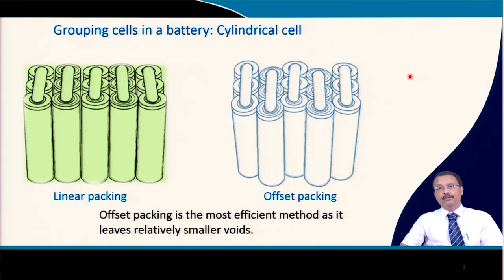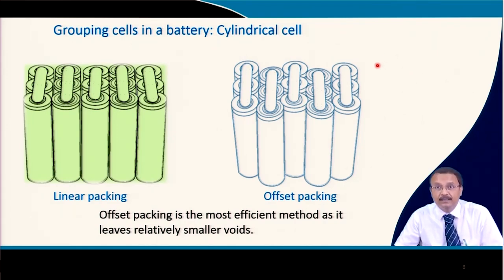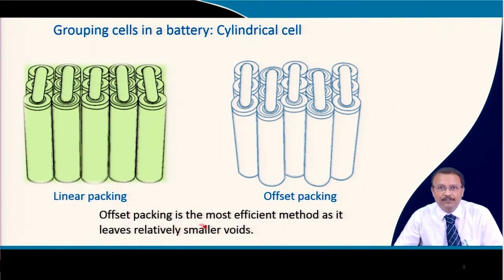Similar connections can be made for cylindrical cells. With pouch cells you have more flexibility with space, but with solid cylindrical or prismatic cells you must pack them efficiently. In linear packing, the void space is relatively large. In offset packing, cells are slightly offset so the gaps are minimized — this is one of the most efficient methods to reduce void space, which is especially important for mobile applications.